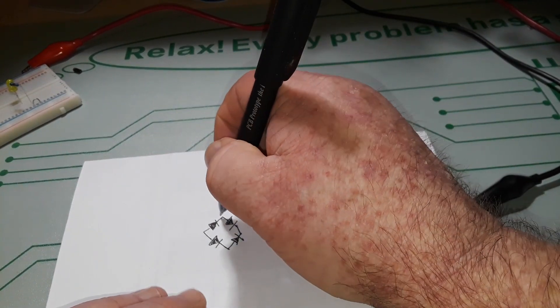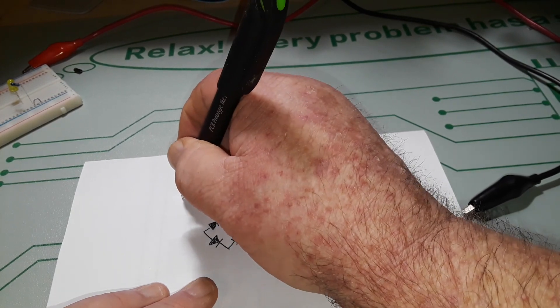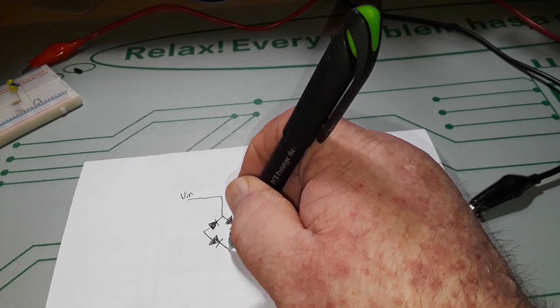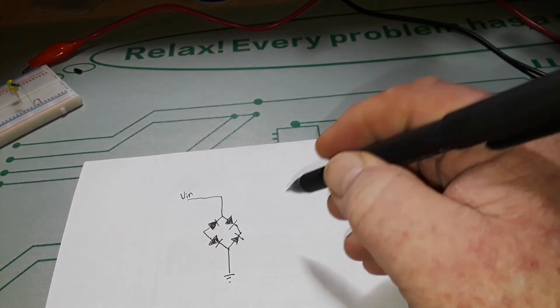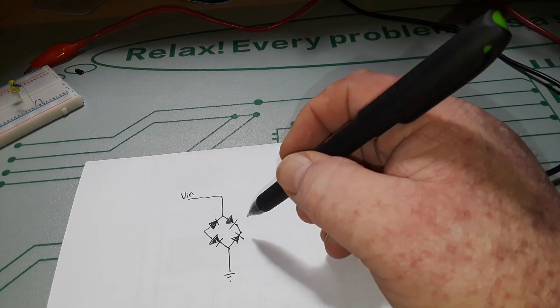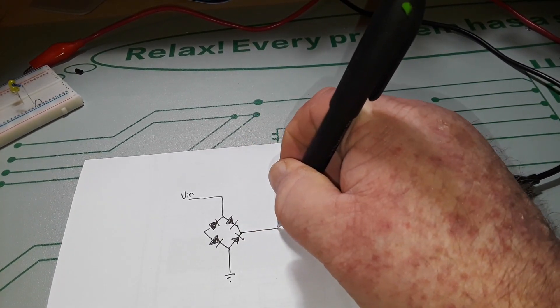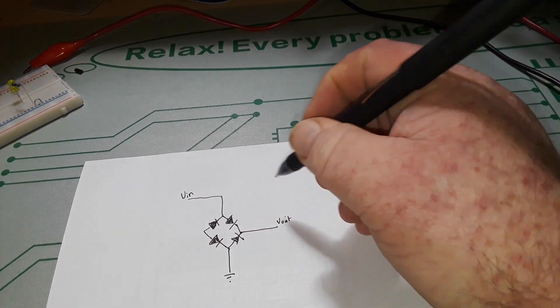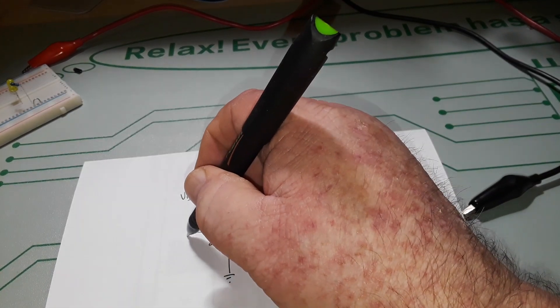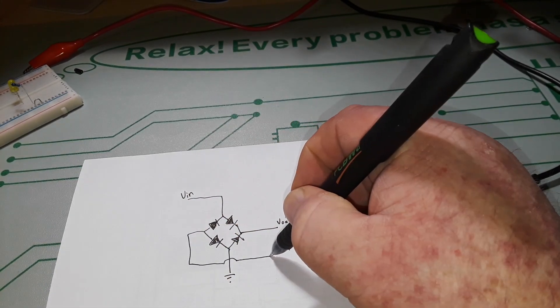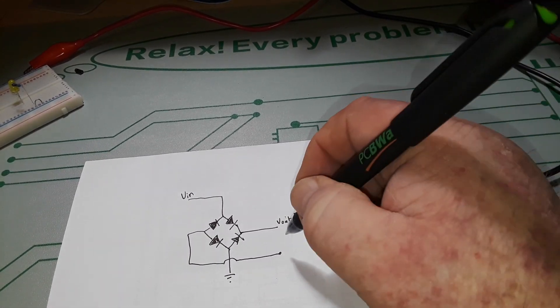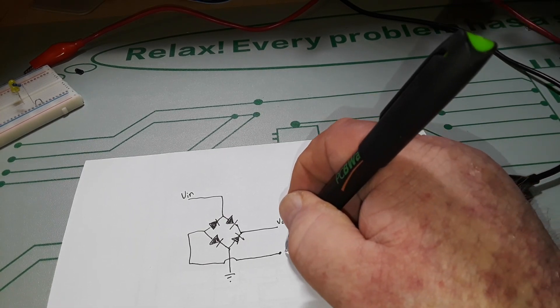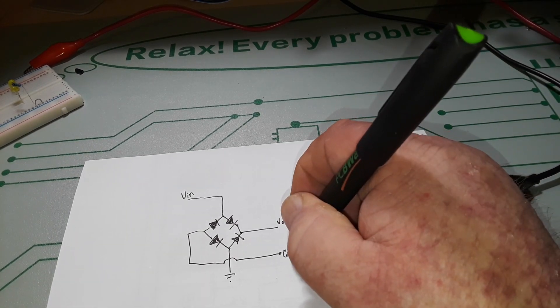So we bring our V in here like so. There's our ground. Now we take this point here becomes our V out. Bring this one over here. And this becomes our new ground, we'll call it.